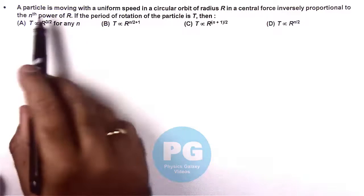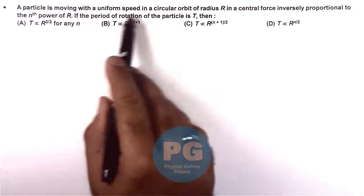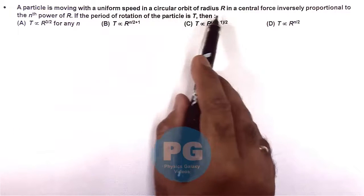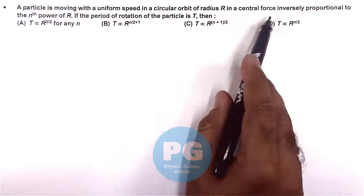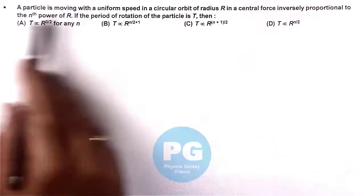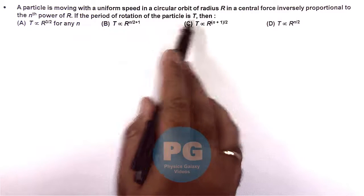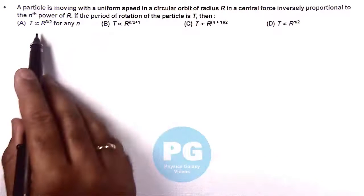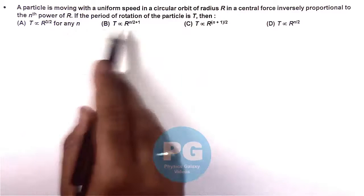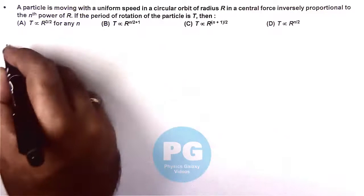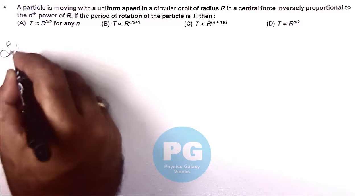In this question we are given that a particle is moving with a uniform speed in a circular orbit of radius r in a central force which is inversely proportional to nth power of r. If the period of rotation of the particle is T, then we are required to find the time period dependence on the radius of this orbit.